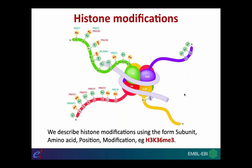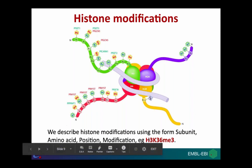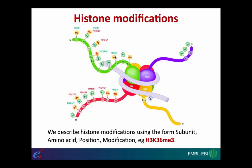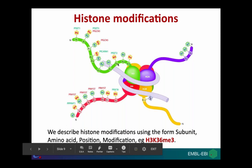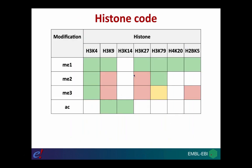In the nomenclature system, we always first refer to the histone — H3 in this case — then the residue, so lysine 36, and then the post-translational modification itself. In this example we're looking at trimethylation of lysine 36 on histone 3, written as H3K36me3. The pattern of histone post-translational modification is known to regulate gene expression, and this is known as the histone code.